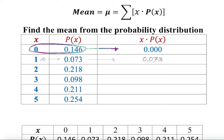Then 3 times 0.098 should give us 0.294. Next, 4 times 0.211 should give us 0.844, and 5 times 0.254 should give us 1.270.